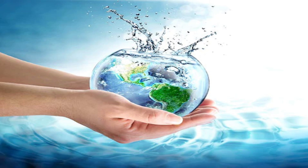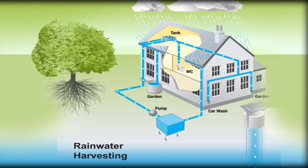Rainwater harvesting is a technique to capture, collect, and store rainwater in tanks or divert it to the ground to recharge the groundwater, to be used as and when required. This is done by special water harvesting devices depending on the area chosen.